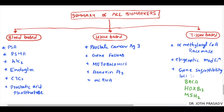The third parameter is age-specific PSA, which proposes certain threshold limits for each age group. This summarizes all biomarkers used in identifying prostate malignancy, basically divided into blood-based, urine-based, and tissue-based.